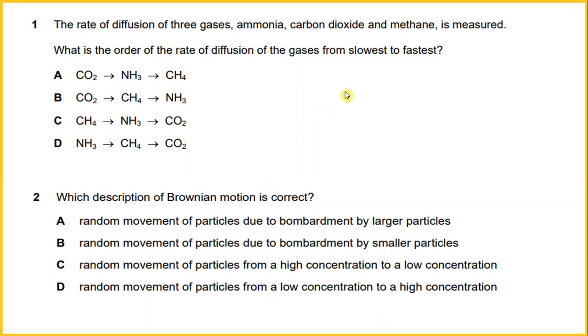The rate of diffusion of three gases, ammonia, carbon dioxide, and methane is measured. What is the order of the rate of diffusion of the gases from slowest to fastest? We have carbon dioxide, ammonia, and methane. This is the arrangement from slowest to fastest. The answer for number one is A.